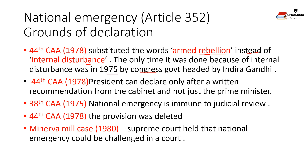The 44th Amendment Act of 1978 substituted 'armed rebellion' instead of 'internal disturbance.' The only time an emergency was declared on grounds of internal disturbance was in 1975 by the Congress government headed by Mrs. Indira Gandhi. By the 44th Constitutional Amendment Act of 1978, the President can declare emergency only after a written recommendation from the cabinet — not just the Prime Minister. This was introduced because in 1975 the Prime Minister advised the President to proclaim emergency without consulting the cabinet, which was informed only after the fact.